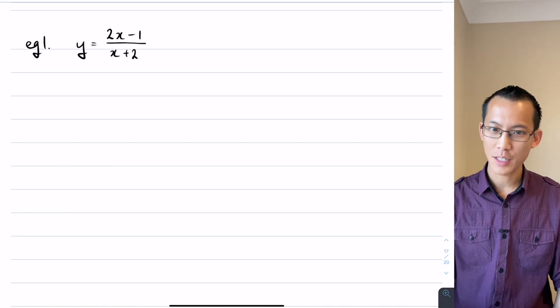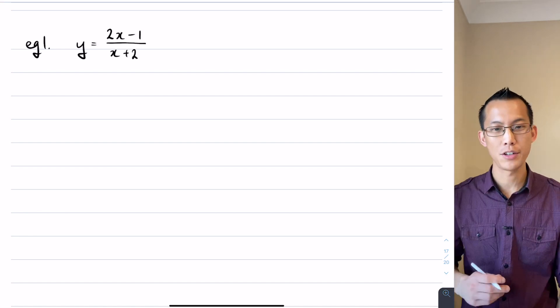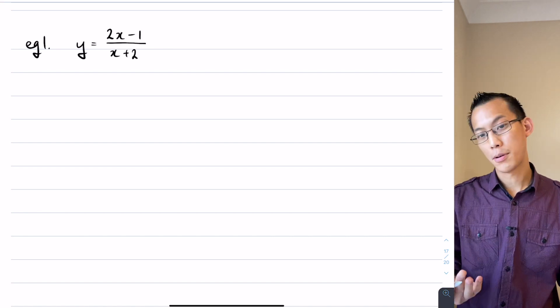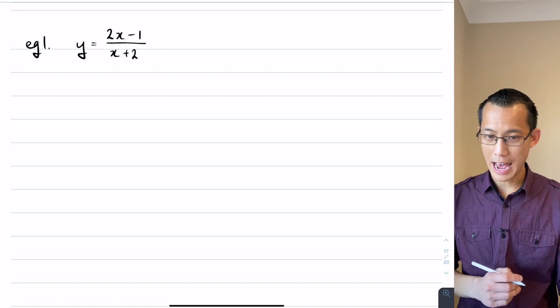y equals 2x minus 1 over x plus 2. It's a rational function because on the top and the bottom you've got some polynomials, and we're going to try and understand what happens here.